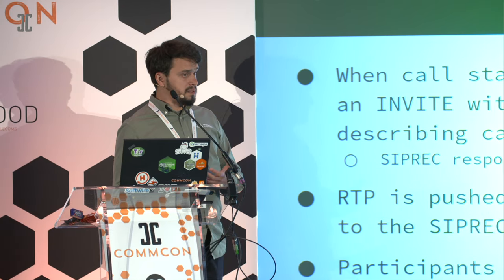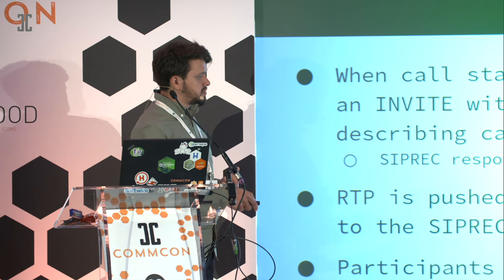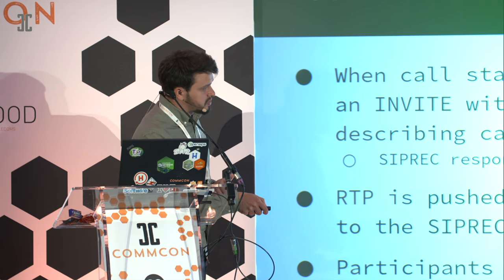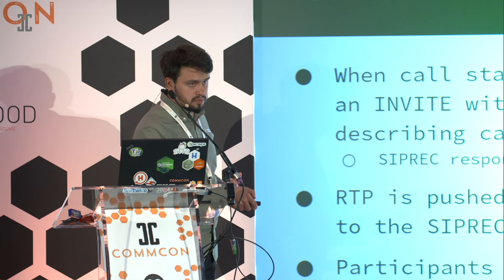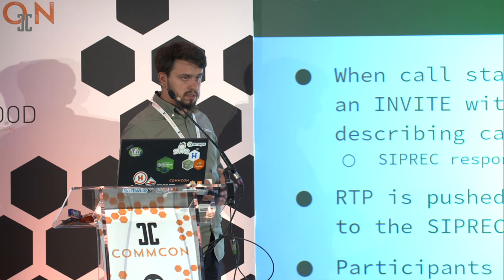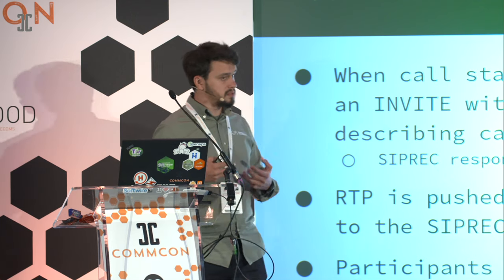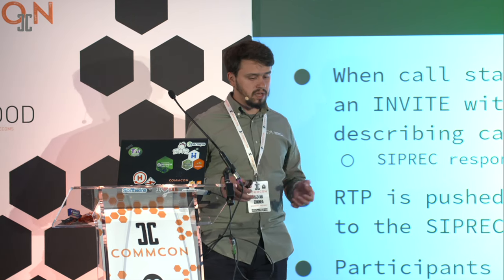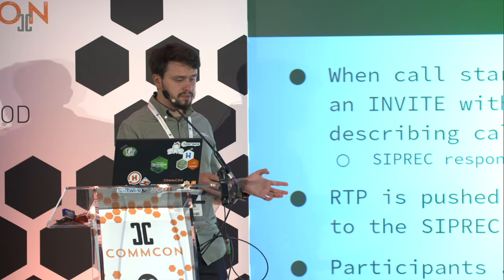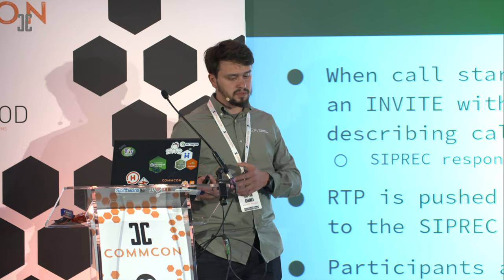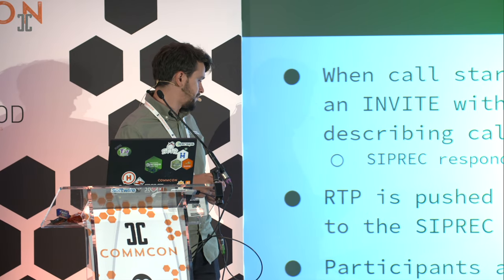But if OpenSIPS gets a 200 OK, it will instruct the media server to duplicate the traffic down to the SIPREC recorder. So the call recorder has both participant information as well as the RTP.